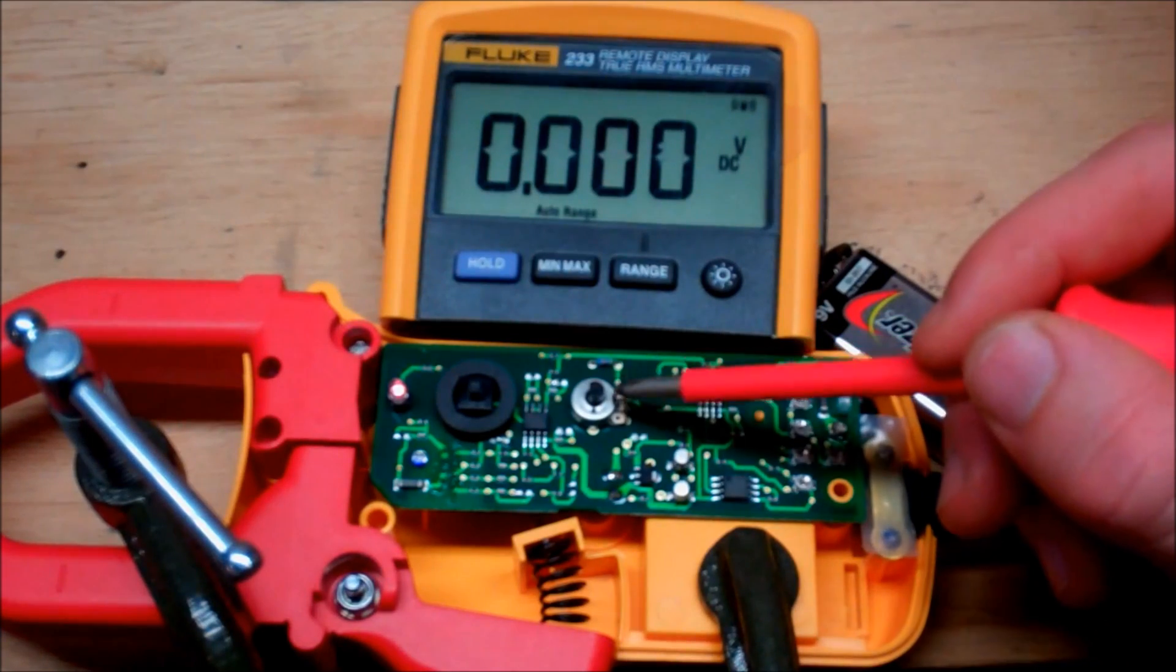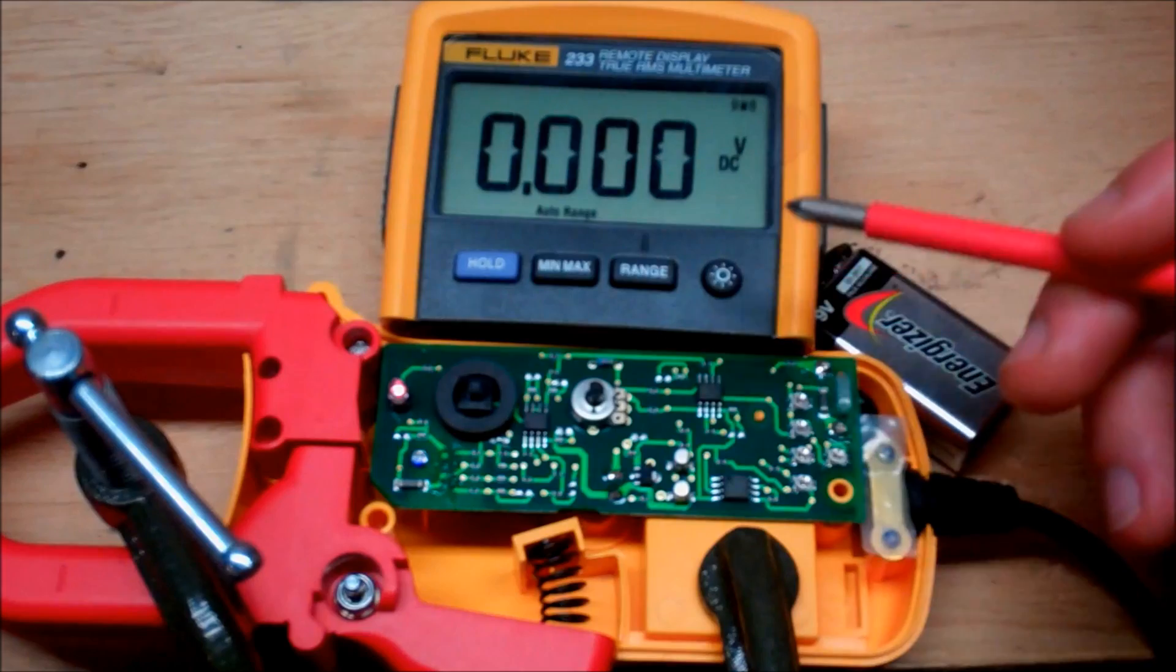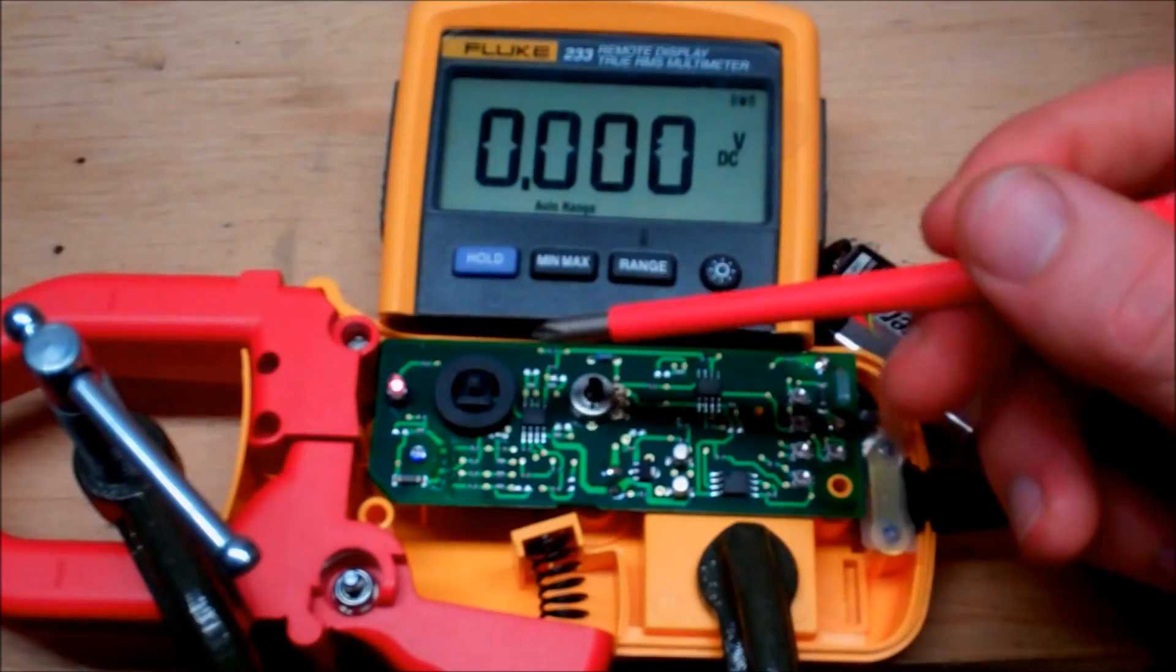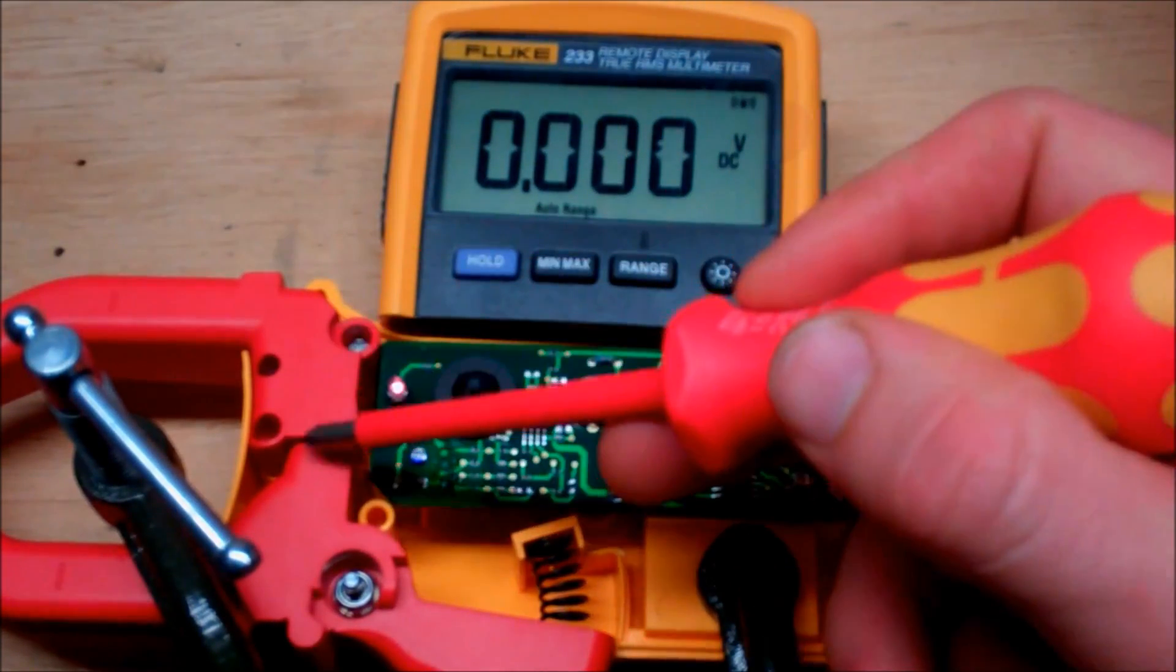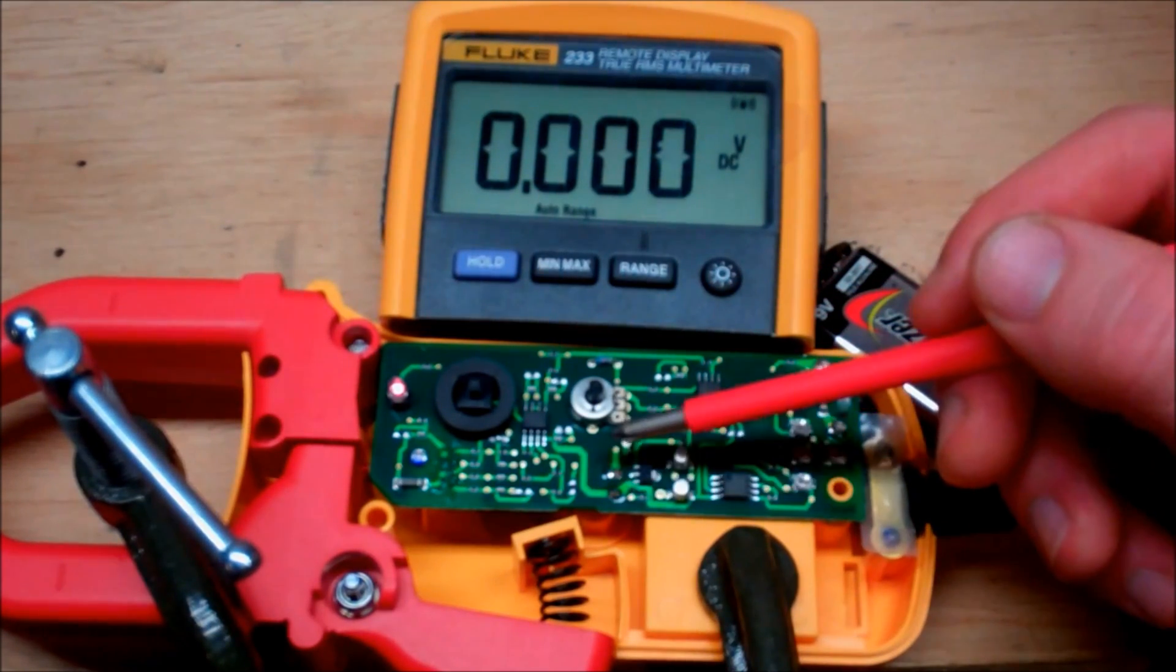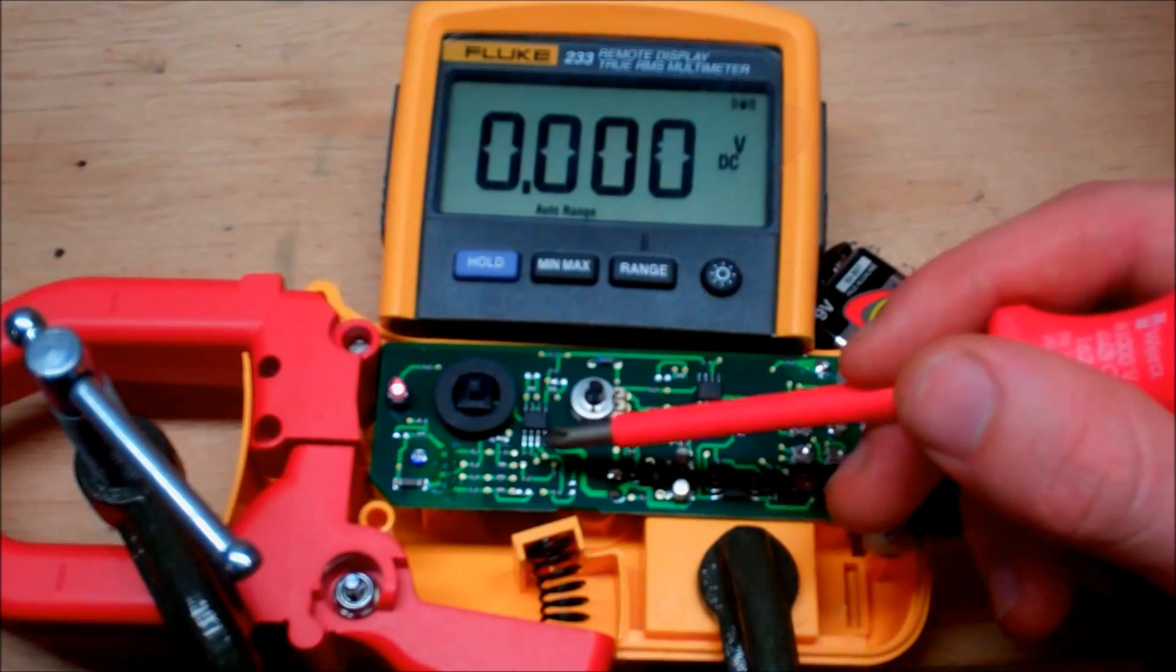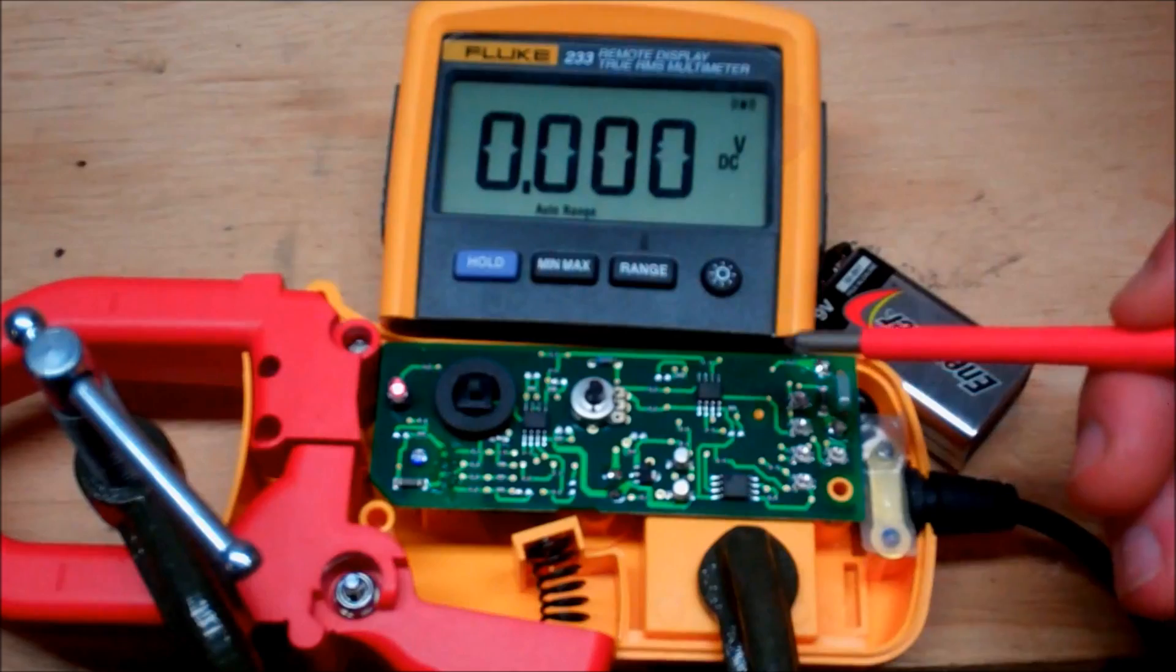And it's very simplistic. Everything is surface mount except for this potentiometer and this unit right here. Everything else is surface mount like I said. And all this unit is doing is taking the signal from the CT and regulating it into a very simplistic signal of millivolts which you can then convert into a current reading. So all it does is it takes that signal, conditions it and gives a proportional output.